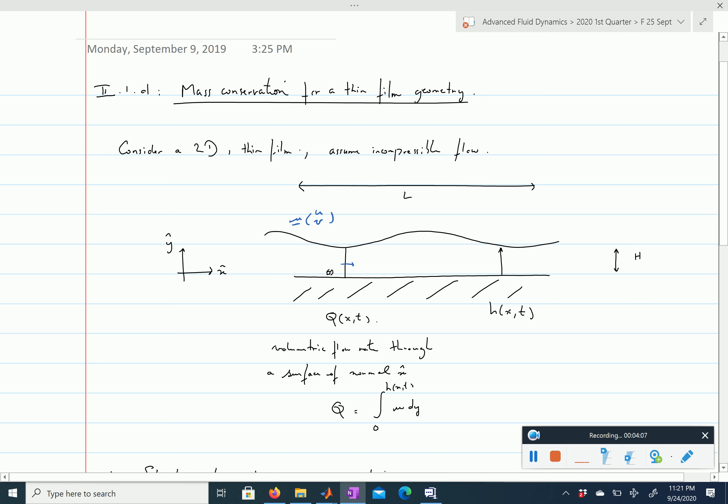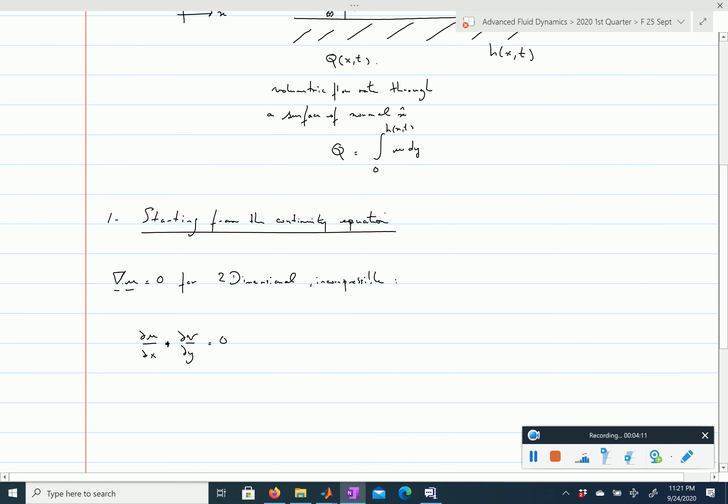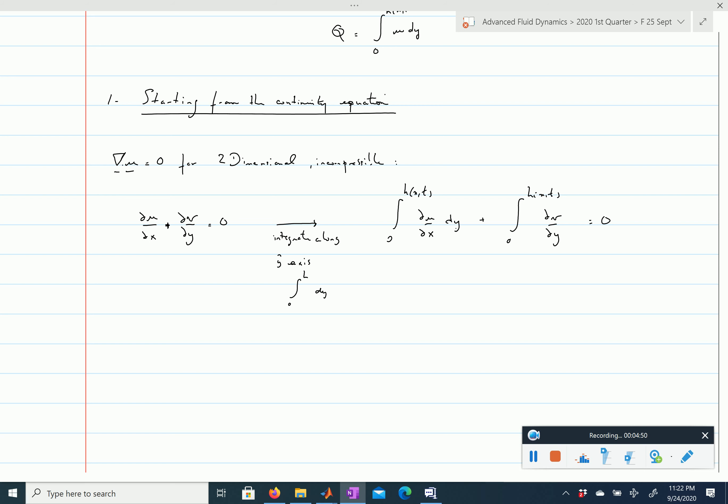We'll take our continuity equation and integrate along the y-axis. We take the integral from 0 to h dy, integrating both terms: the integral from 0 to h of (∂u/∂x) dy plus the integral from 0 to h of (∂v/∂y) dy. The second term is easier to compute.